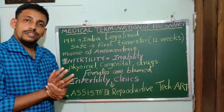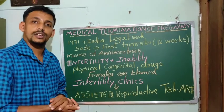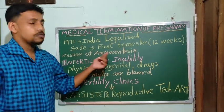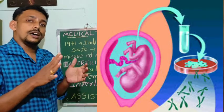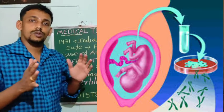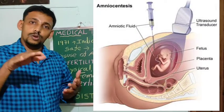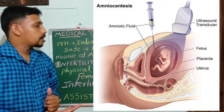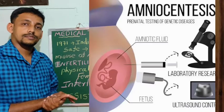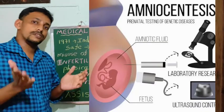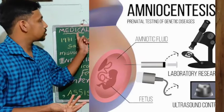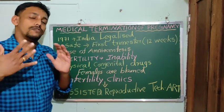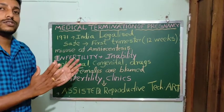There are some disturbing trends in MTP, because most MTPs are carried out illegally. There is also misuse of amniocentesis — a technique that can detect abnormalities of the fetus, including genetic and congenital diseases. However, it is misused to determine the sex of the baby. If the fetus is found to be female, it may lead to MTP, which is illegal and amounts to female feticide. Such practices should be avoided.